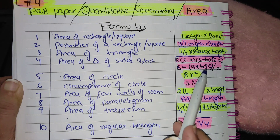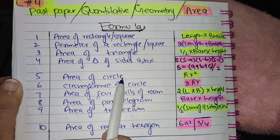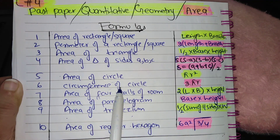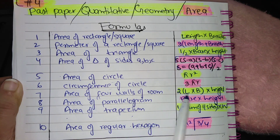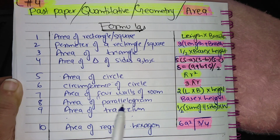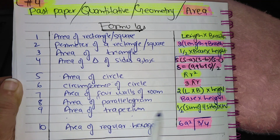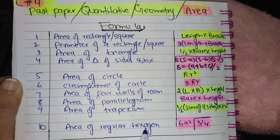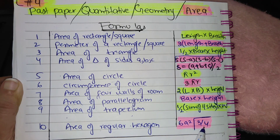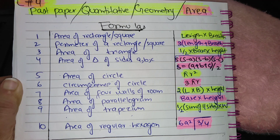Area of triangle with sides a, b, and c is: √(s(s−a)(s−b)(s−c)), where s is the sum of all sides divided by 2. Area of circle: π r². Circumference of a circle: 2πr. Area of four walls of a room: 2(length + breadth) × height. Area of parallelogram: base × height. Area of trapezium: half × (sum of parallel sides) × height. Area of regular hexagon: 6 × (√3/4) × side².